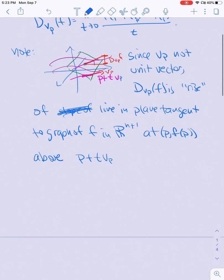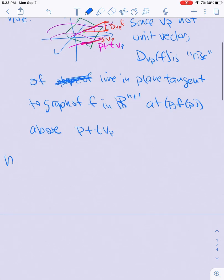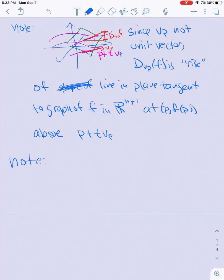Another thing to note is that directional derivatives can be computed with linear transformations. D in the direction of v_p of f is the same thing as the limit as t approaches zero of df at the point p applied to tv_p divided by t. The fact that df is a linear transformation means you can cancel out the t's, and this is just df at p applied to v_p.